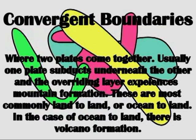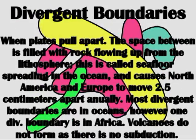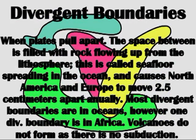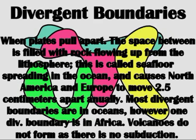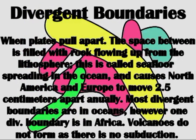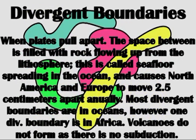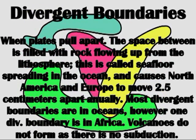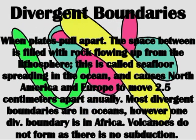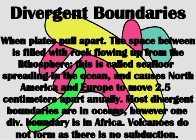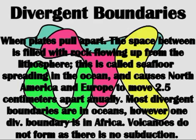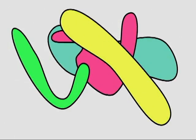Volcanoes form at ocean-to-land convergent boundaries. Divergent boundaries form rifts where lava comes up between the rift in two plates. There will not be any volcanoes at divergent boundaries, and most divergent boundaries are actually underwater in the ocean.